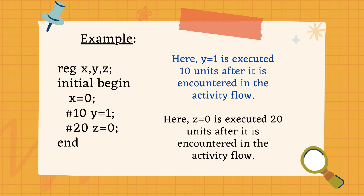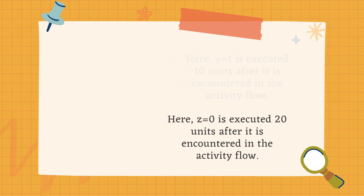For example, with reg x, y, z in an initial begin-end block, we assign y equal to 1 and z equal to 0. However, y equal to 1 will be executed 10 time units after it is encountered in the activity flow. So first x equals 0, then after 10 time units y equals 1, and similarly after 20 time units of delay, z will be assigned 0.